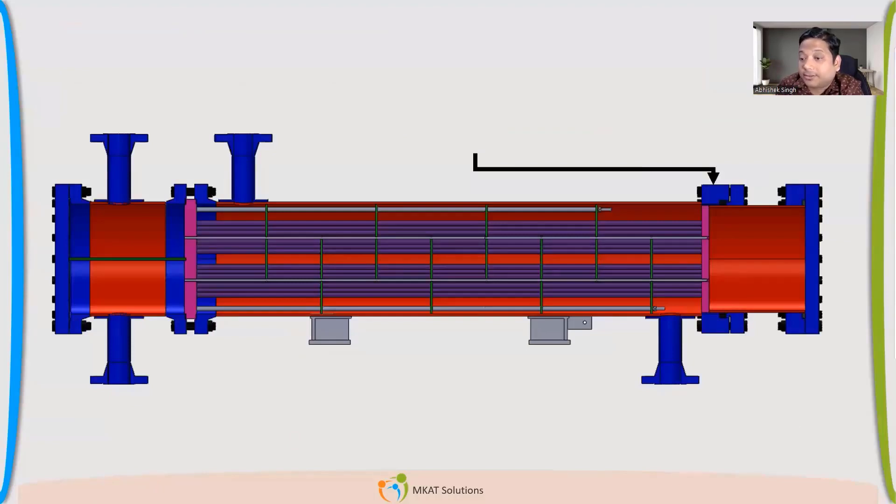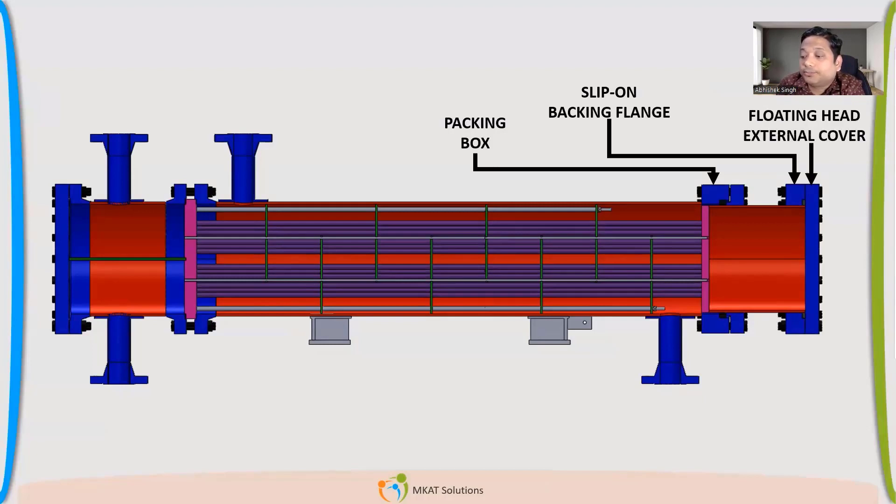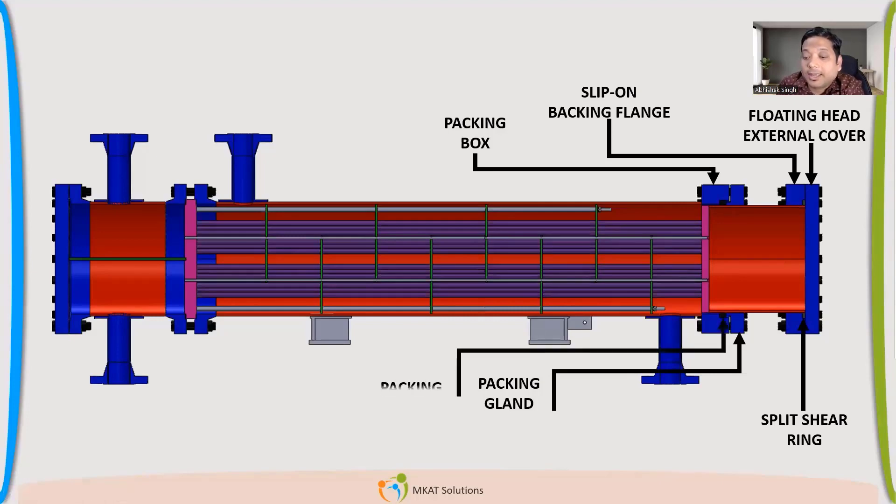There are other types of floating head like this. So how we call it, it's P type. So packing box. Sleep on backing device. Guys. Will cover this in very detail. Different configuration. So floating head cover. External cover. Split shearing. Packing glands which are there on the top of this channel to pack this. And there are floating tube sheet skirt. Because this is called floating tube sheet. This tube sheet and this, the skirt. So it floats on the packing.